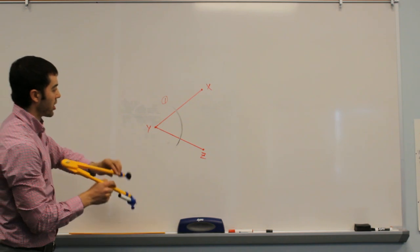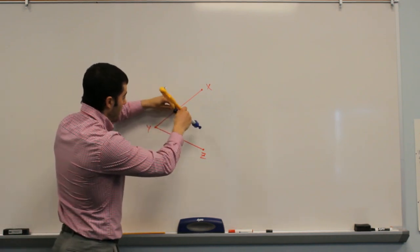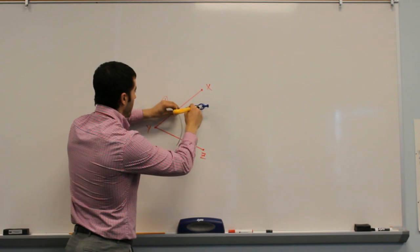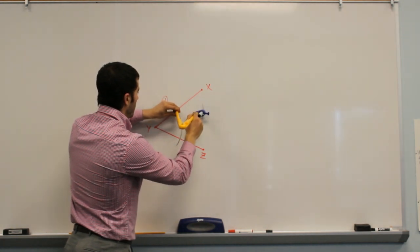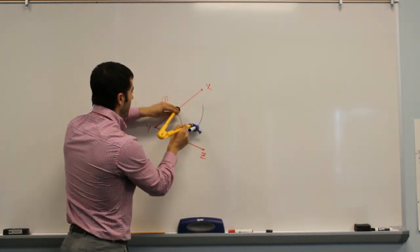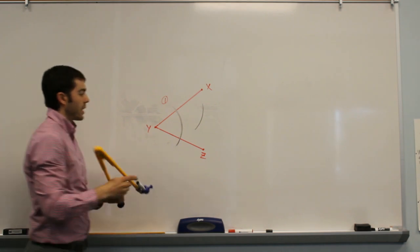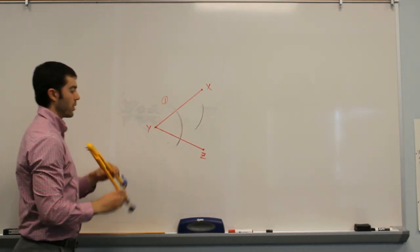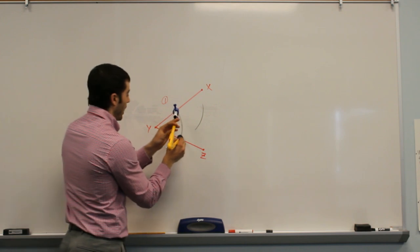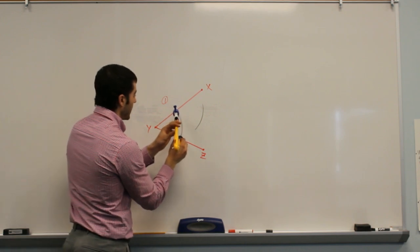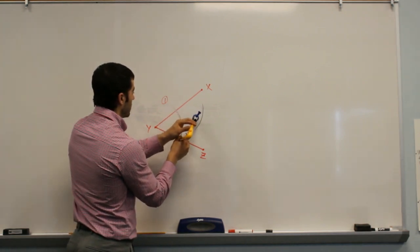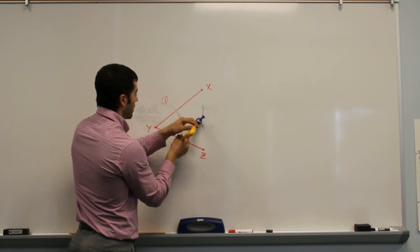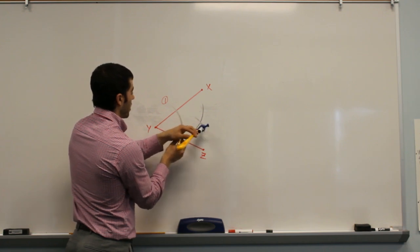So we're going to take the point of our compass, we're going to put it on the point where the arc intersects the angle, and we're going to make ourselves an arc here. Then we're going to do the same thing from the other intersection point, so the point of our compass is now going to go on the opposite line segment, and we're going to make ourselves another arc.